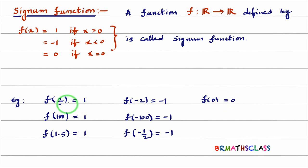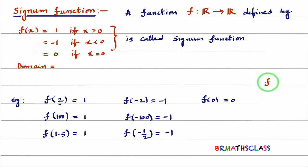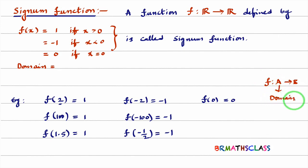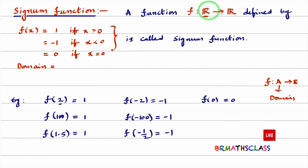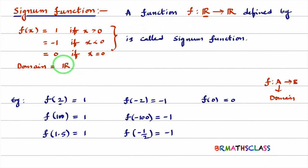Now I will write the domain, codomain, and range of the signum function. For a function f from A to B, set A is called the domain. Since this function is from all real numbers to real numbers, R is the domain. So the domain of this function is the set of all real numbers.